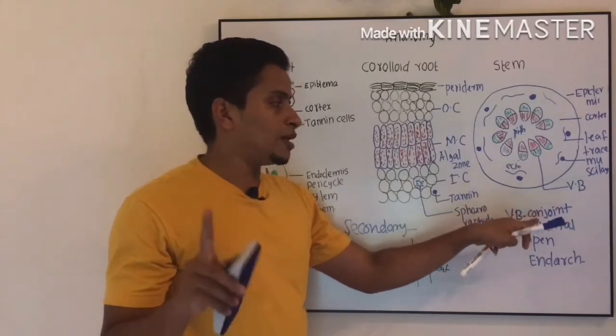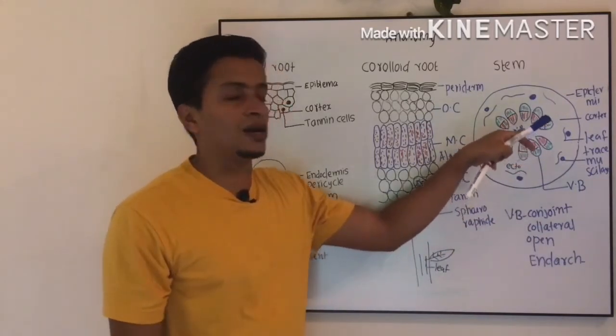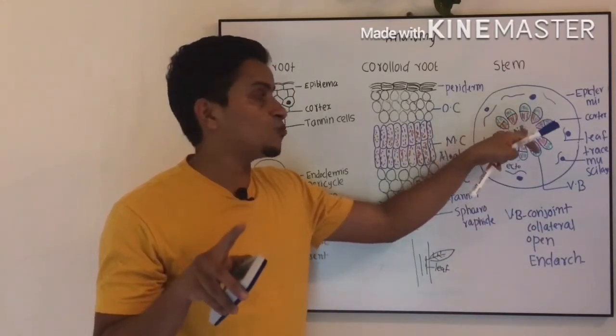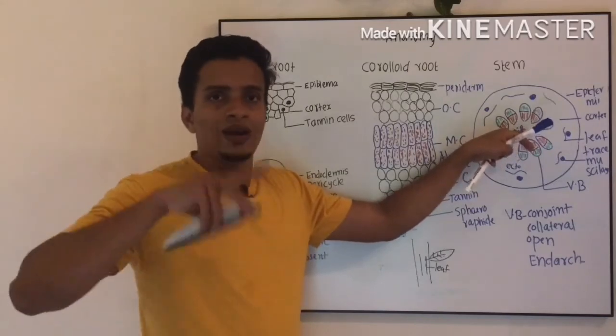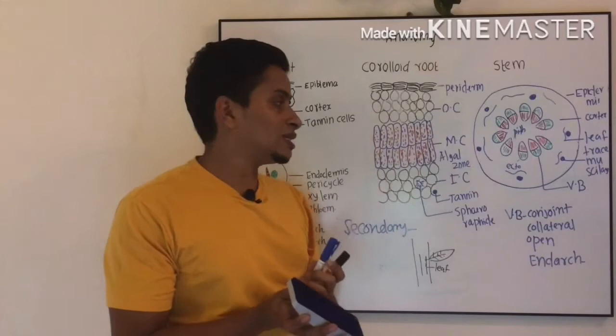The vascular bundle will be conjoined, collateral, open, and endarch. Endarch is because we have a stem, and endarch. And you can see the presence of pith. One well-developed pith is present in the internal anatomy of the stem.